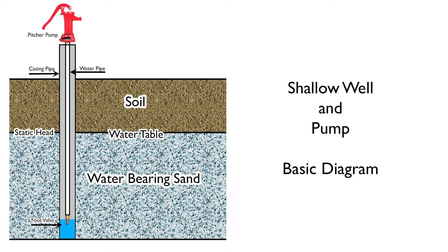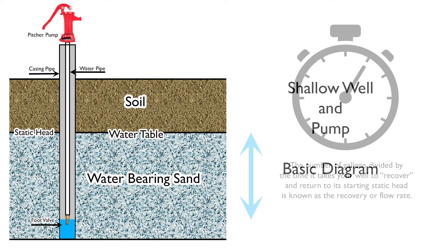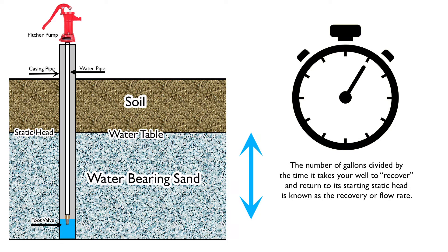In order to find the flow rate or recovery rate of this shallow well, we're going to have to pump it out faster than it can recover. After we get to that point, we can begin to figure out our flow rate. It's basically the number of gallons divided by the time it takes your well to recover and return to the starting point before you began pumping.